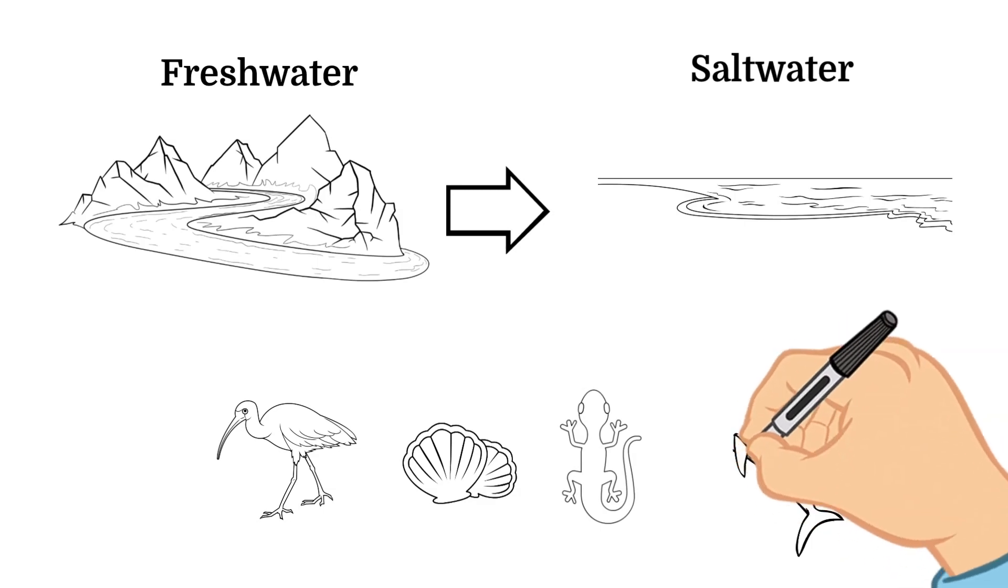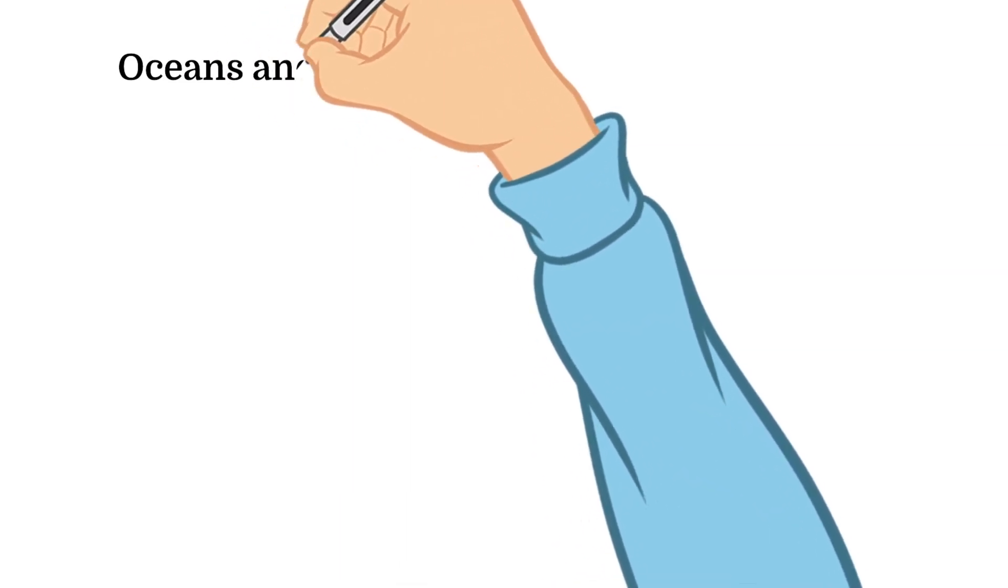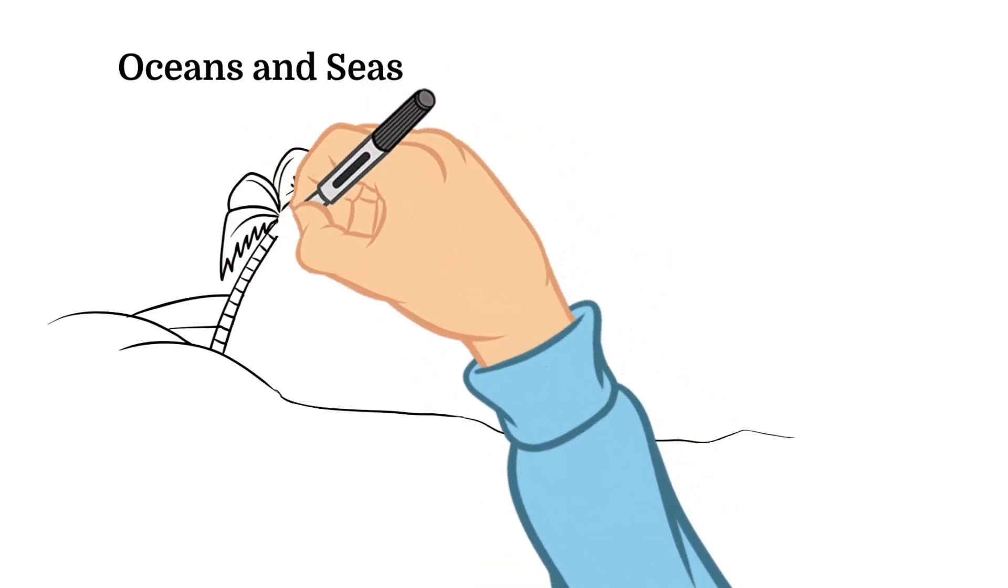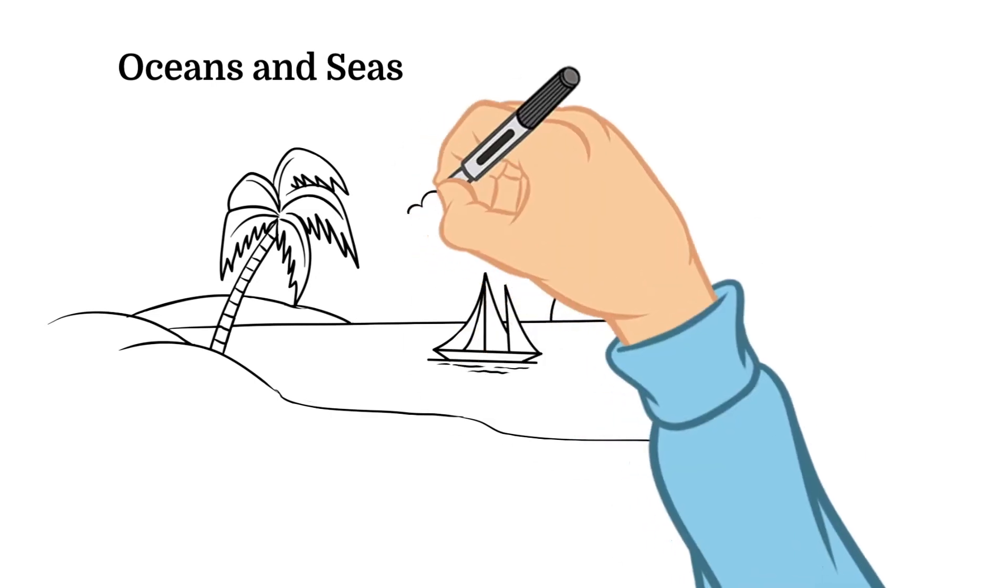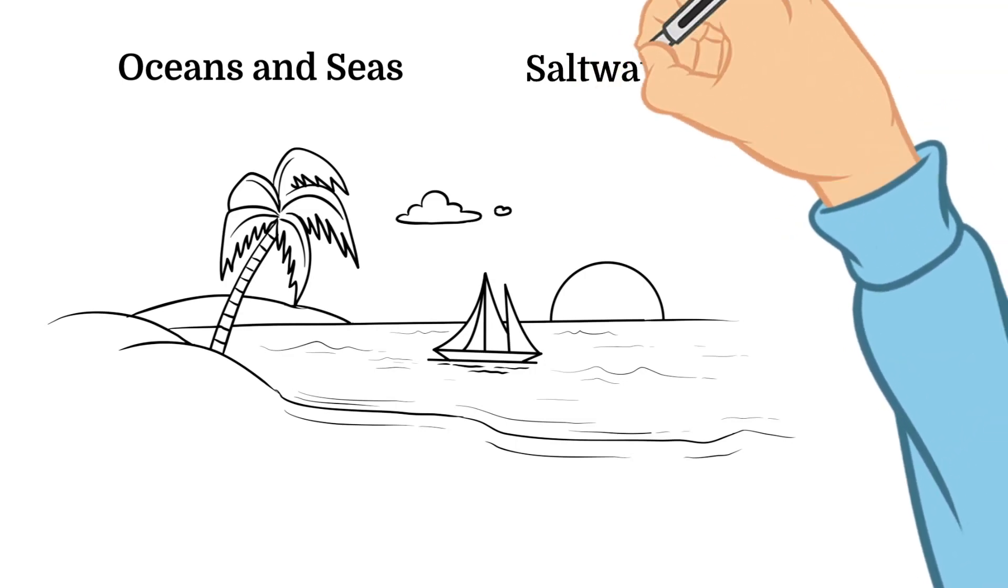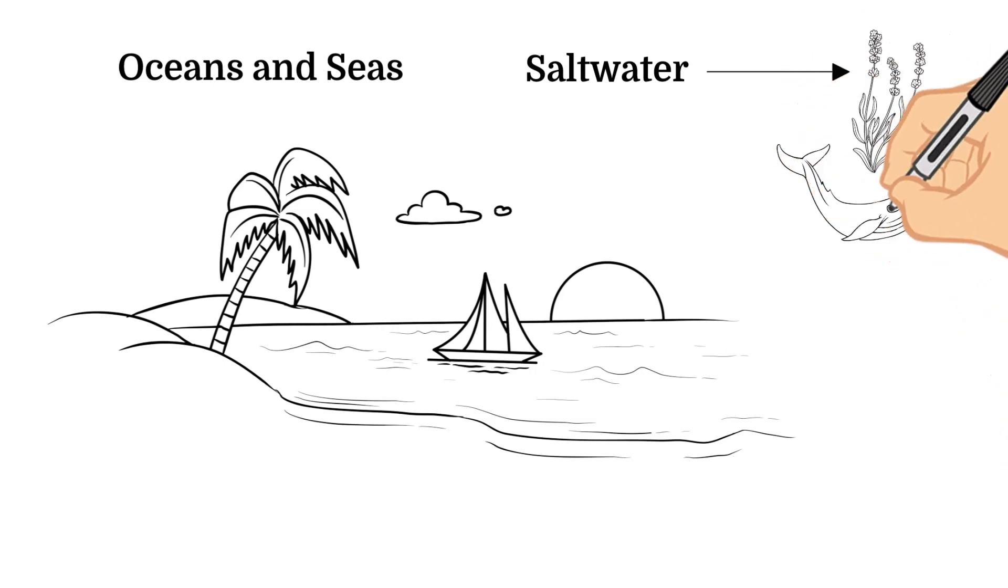Now we get to our last aquatic biome for the day and these are oceans and seas. This is the largest and most expansive biome in the world. These are different than the other aquatic biomes that we have talked about today in the fact that they are not a freshwater aquatic biome but they are a saltwater aquatic biome instead. This plays a major role in deciding what flora and fauna live in the area. Oceans are divided into four zones depending on the depth of the water, similar to how lakes are divided.